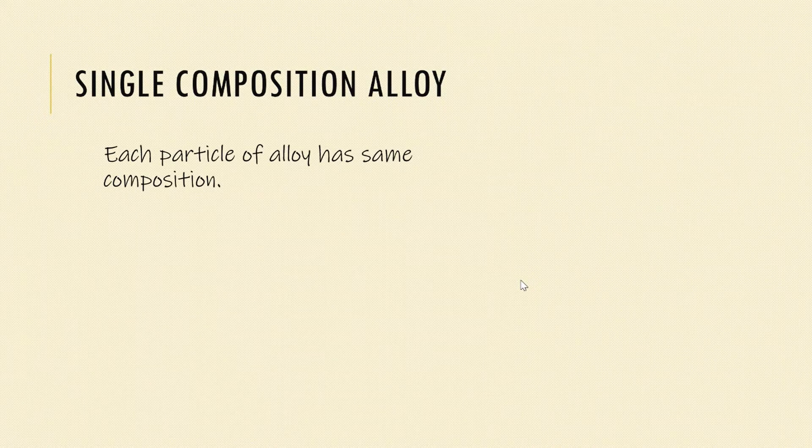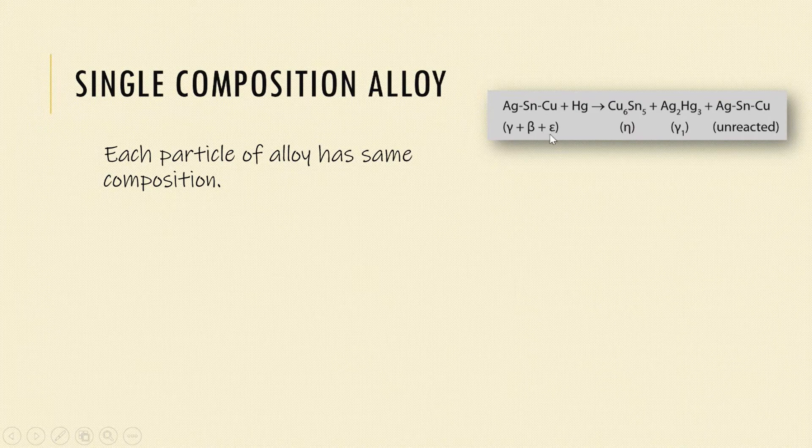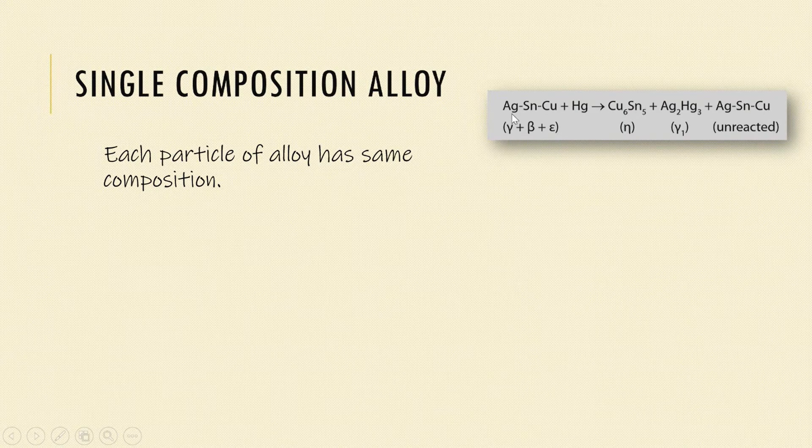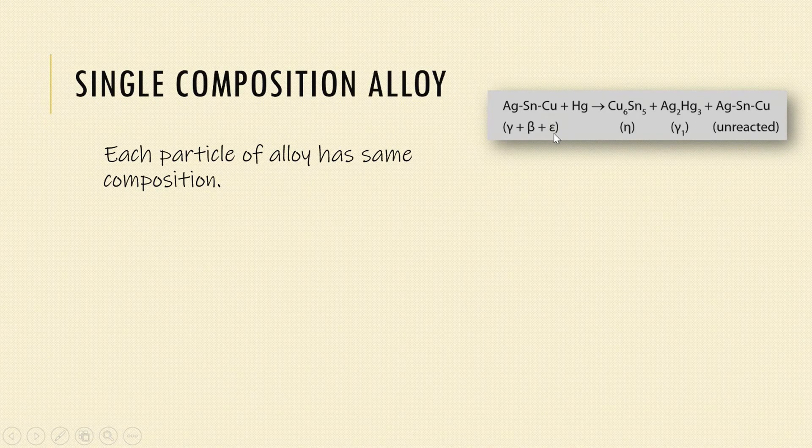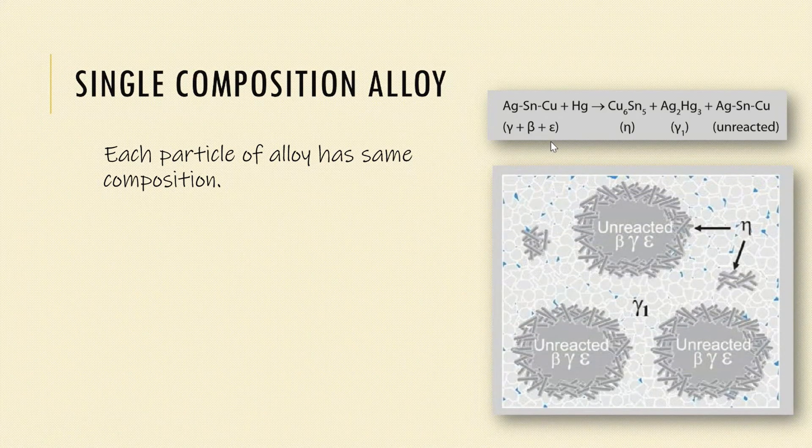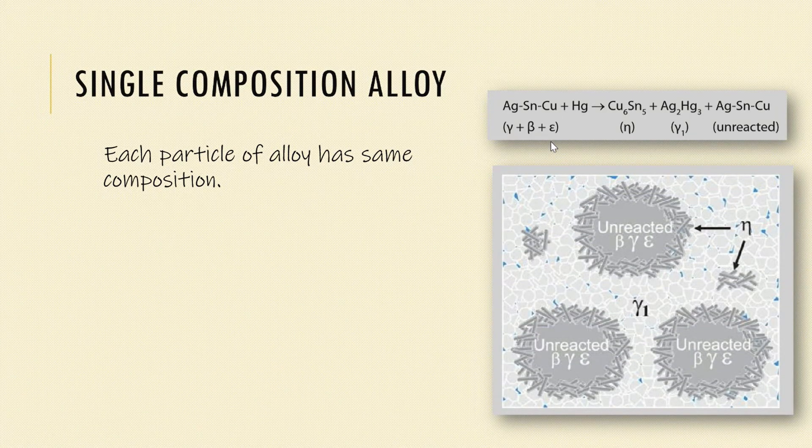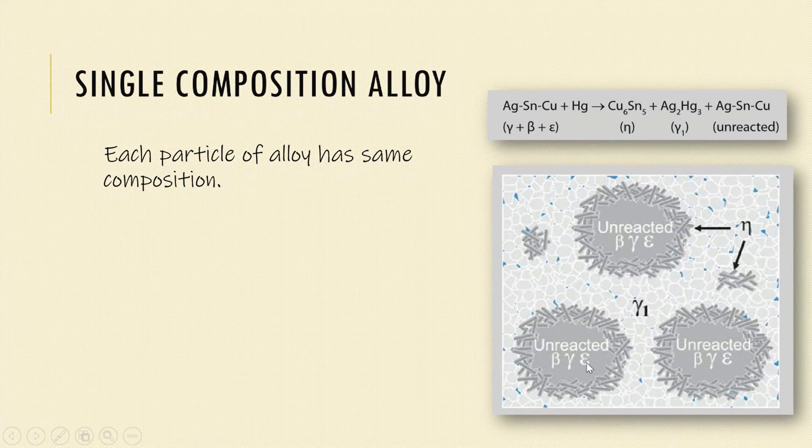Let's move on to the unicomposition alloys. In these alloys, there is same composition throughout but the silver, tin, and copper particles are present in different phases. Each alloy particle contains the gamma phase, the beta phase, and the epsilon phase. When this alloy is triturated with mercury, the silver and tin dissolve forming the gamma 1 crystal matrix that binds together the partially dissolved alloy particles.